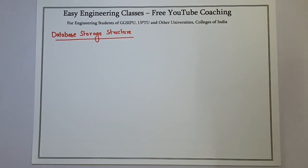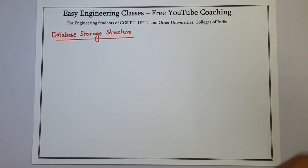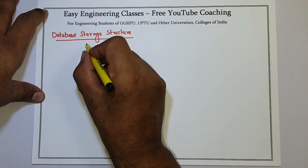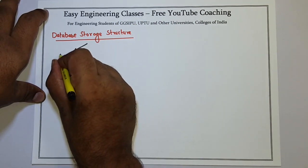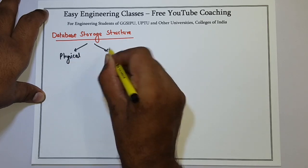Hello. In this class we will discuss the introduction of database storage structure. This section deals with the storage of a database in the system. There are two different types of database structure that Oracle database supports: one is physical and another one is logical database structure.